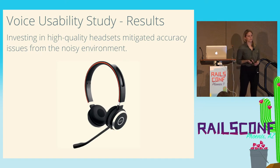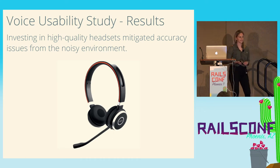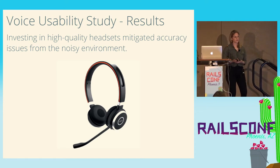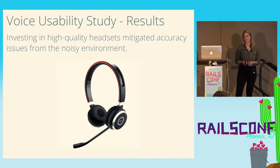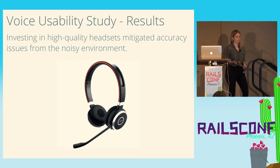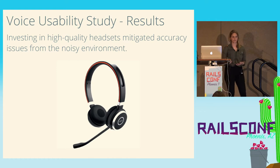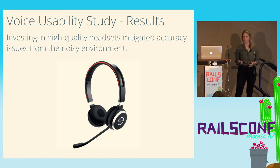The next thing we wanted to look at was accuracy. We found that investing in the right headset was really the key here, and we were able to mitigate the accuracy issues from the noisy environment. The headset we ended up purchasing has a pretty narrow input range. The most important factor is that the microphone can be flipped up into the headset and stops recording when it's flipped up. This was important for keeping the culture going in the warehouse — associates could move seamlessly back and forth between measuring and singing along or talking to their friends.